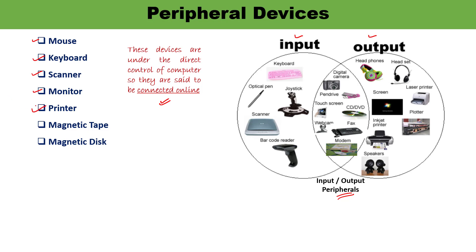Printer is also an output device. If you give a command, the printer prints the given output from the computer. After printing, whatever you receive is permanently stored on paper, which is known as a hard copy of the output. There are various types of printers — dot matrix, inkjet, and laser.